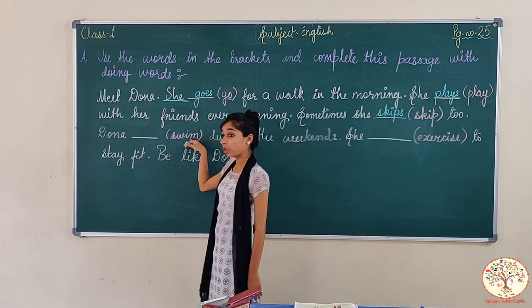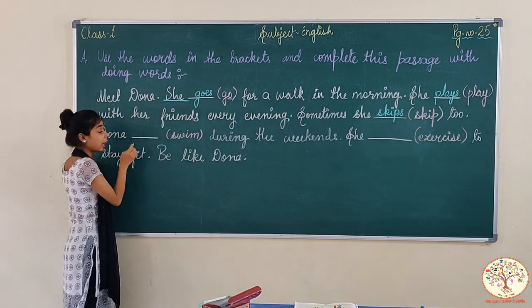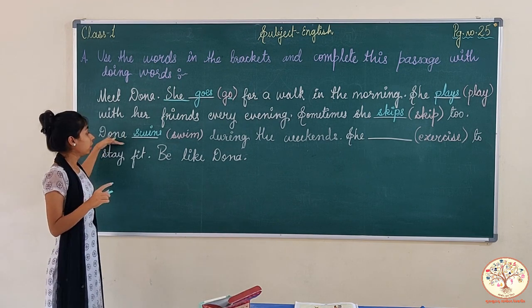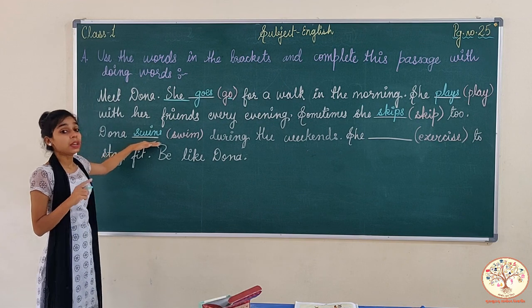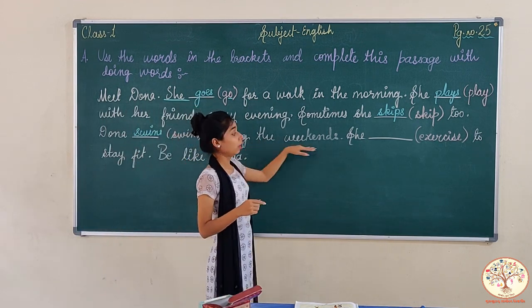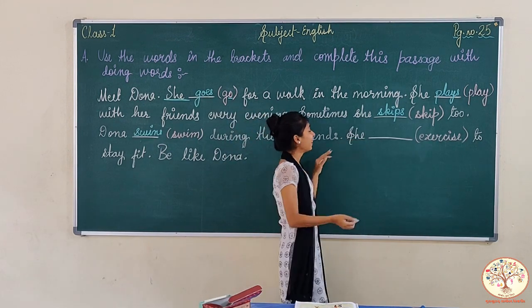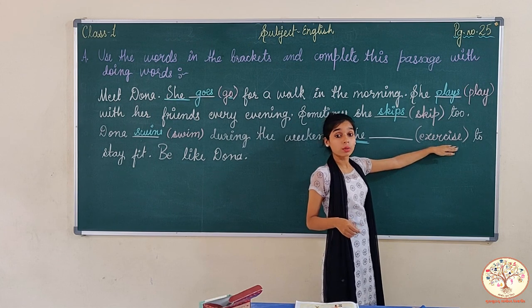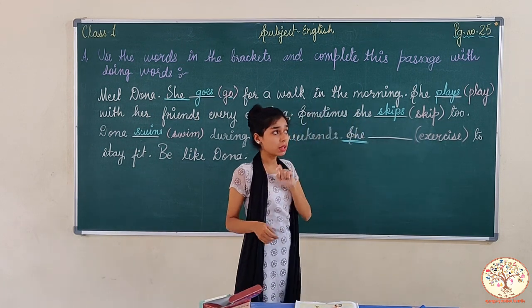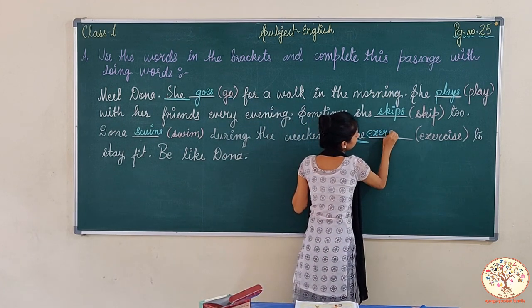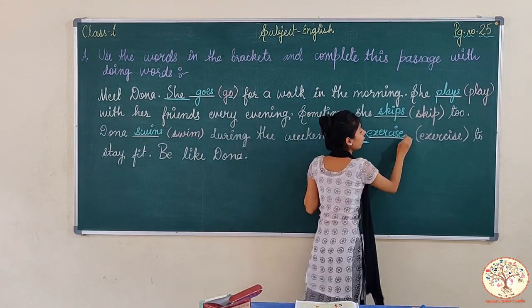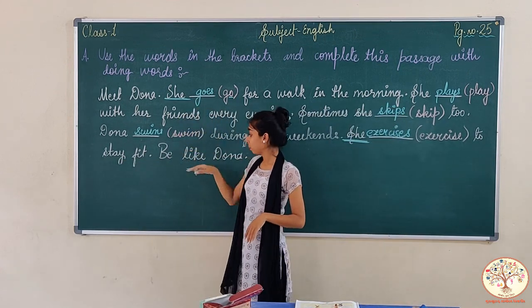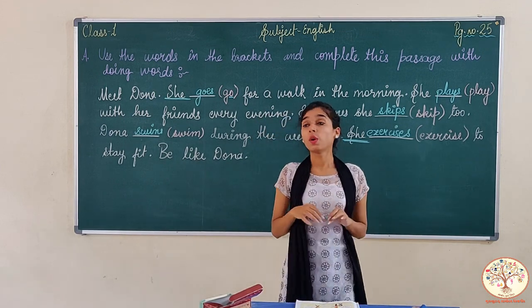Dona — swim. We have the doing word 'swim' in the bracket and it is in its first form. What will we add to make it plural? Whenever we talk about a single person, the doing word should be in its plural form — so it becomes 'swims'. She means a single girl. What is the next doing word? Exercise. How do we make 'exercise' plural? We will add S — 'exercises' — to stay fit. Be like Dona. So here we have the complete passage.